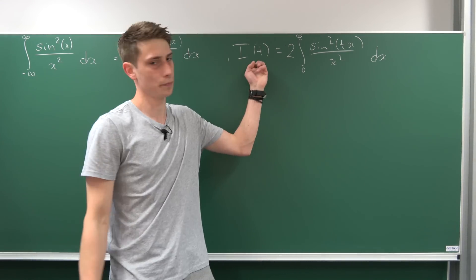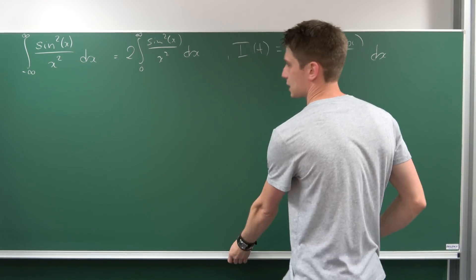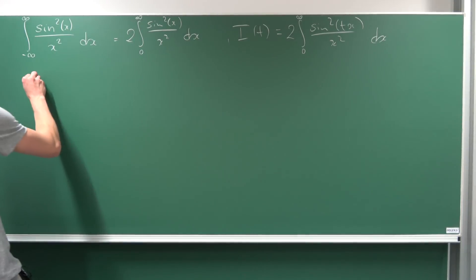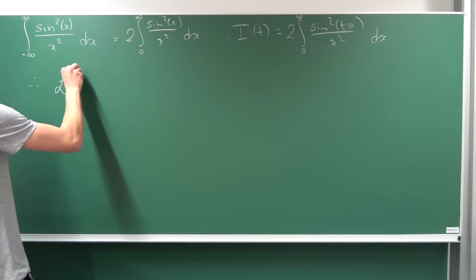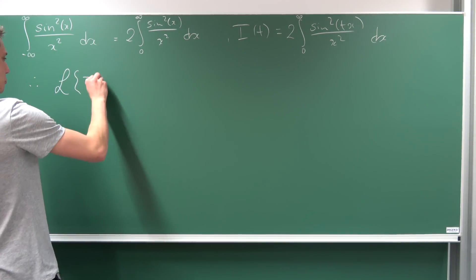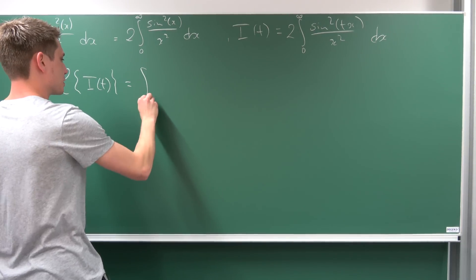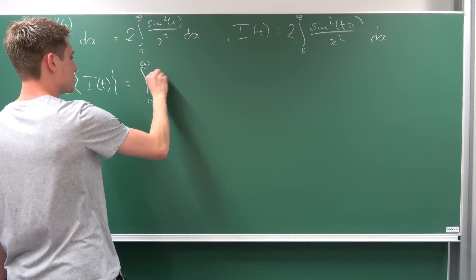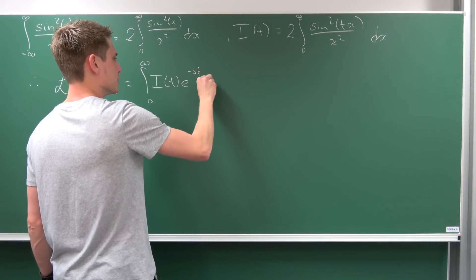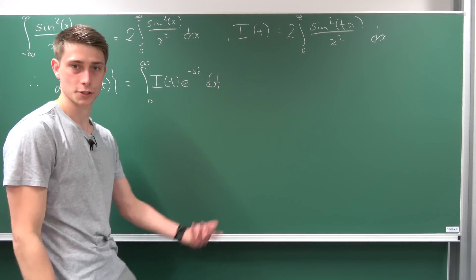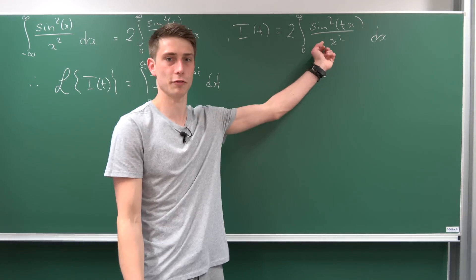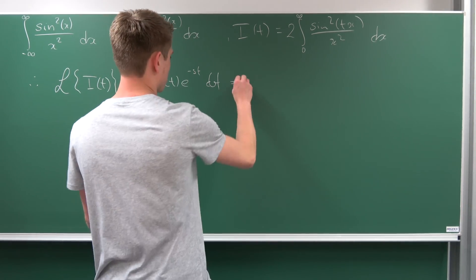Let's use the Laplace transform on I(t) and see what we get. The Laplace transform of I(t) - what is that? By definition, the Laplace transform is just the improper integral from 0 to infinity of I(t) e^(-st) dt. So far so good. Now let's plug in the definition for our I(t).